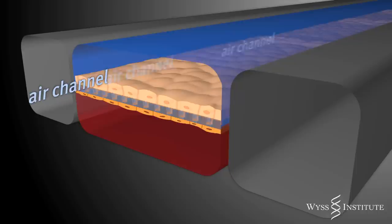In the lung on a chip device, air flows over the top of the human lung cells and a liquid medium containing human white blood cells flows below the capillary cell layer.